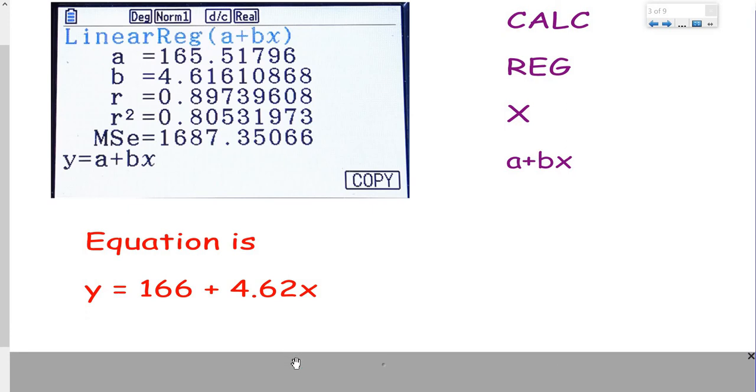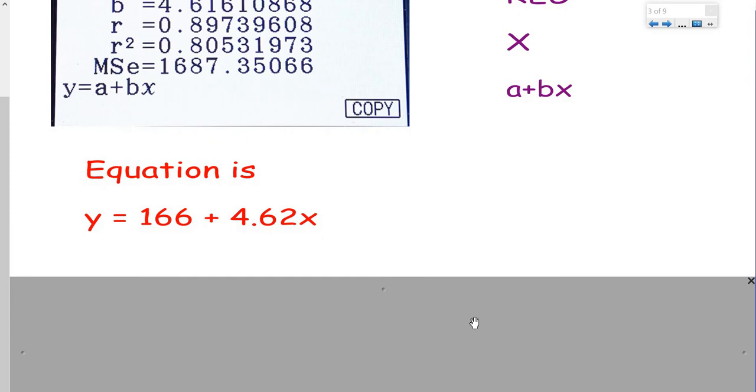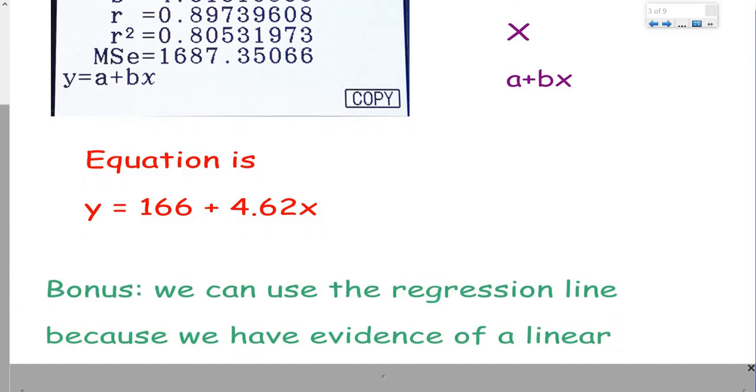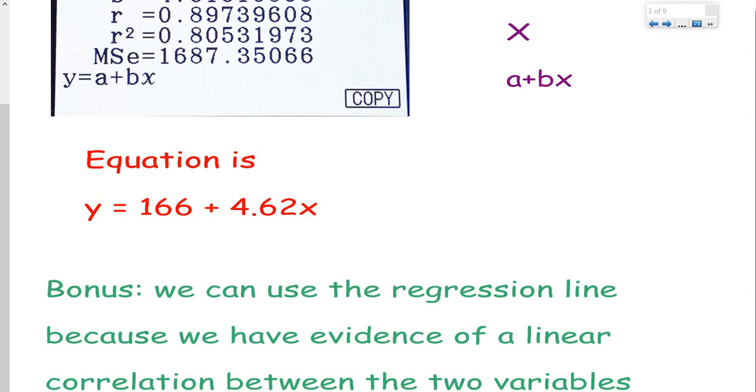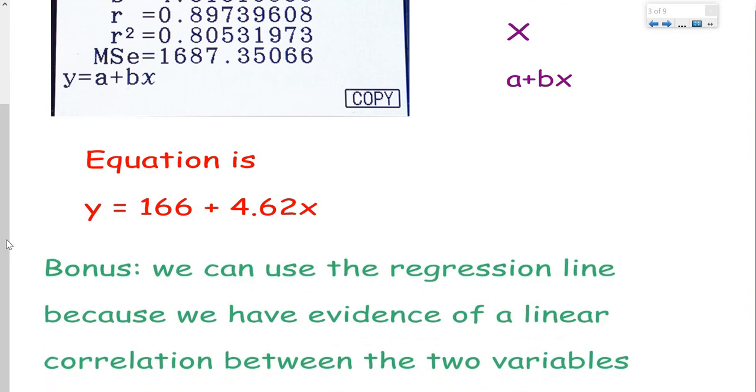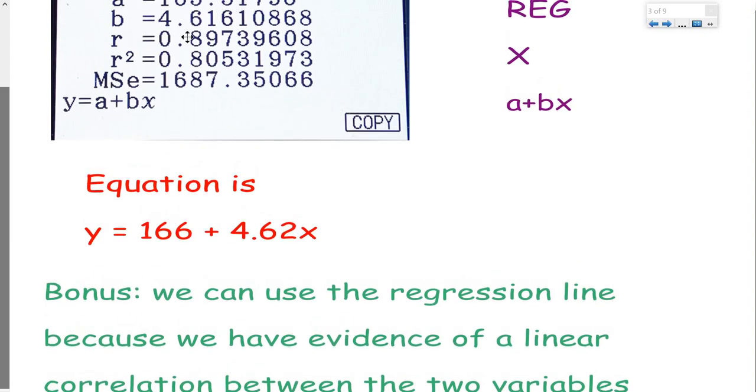For later calculations, I'm going to be using the full values. Remember, why can we use this equation regression line? Because we have evidence of a linear correlation, a linear relationship between the two variables. If that R value was very low, then it wouldn't make sense to model this with a straight line.